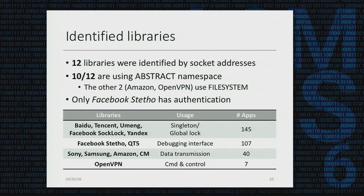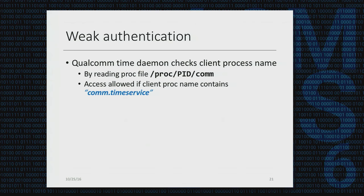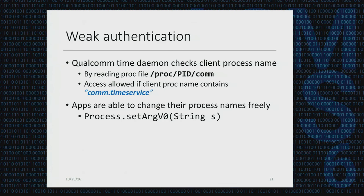We identified 12 libraries based on their socket addresses. Ten of them are using abstract namespace, while the other two — Amazon and OpenVPN — are using file system sockets. To our surprise, only Facebook's Lite desktop library has authentication inside. We also found that Qualcomm's time daemon checks the command's process name, which is a very weak authentication method. Qualcomm's time daemon only allows commands sent from processes whose process name contains the constant string 'com.time.service'.